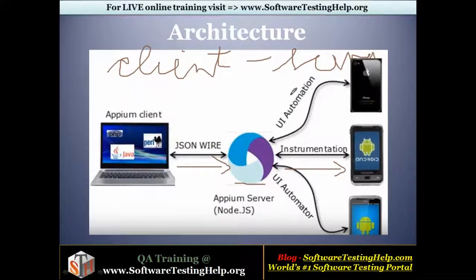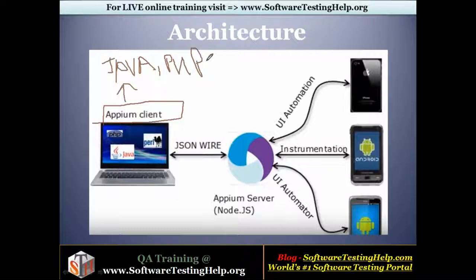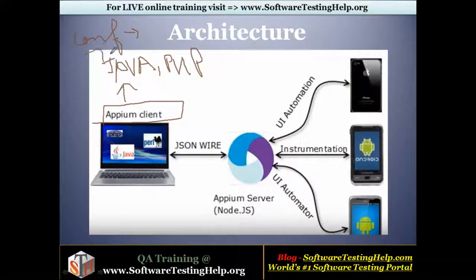Let's understand each component. The first component is the APM client, which is nothing but the script that we code — in Java, PHP, or Python. Whatever automation code we script is called the APM client. This code holds the configuration details like what device you are targeting, the mobile version details, and then the main automation logic.